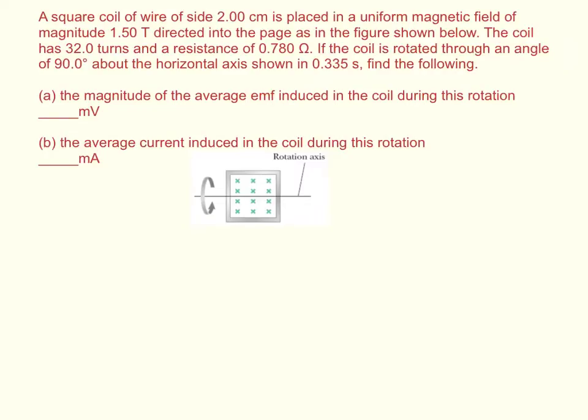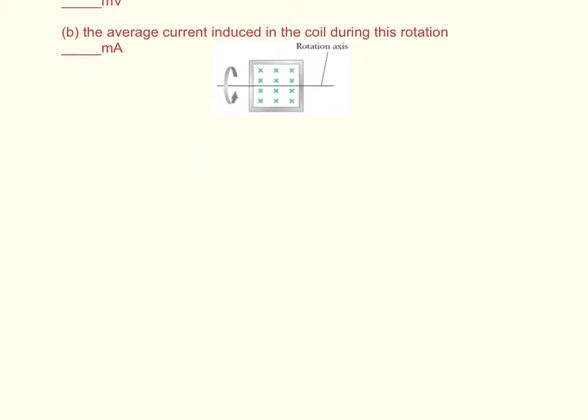So the first thing it wants to know is the average EMF, and we have that the EMF is equal to the change in magnetic flux over time. We can break down magnetic flux to be the magnetic field times the area times the sine of theta over time.